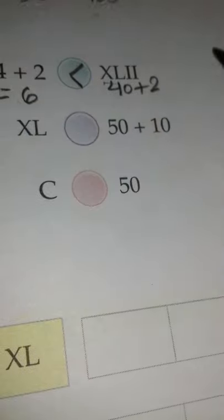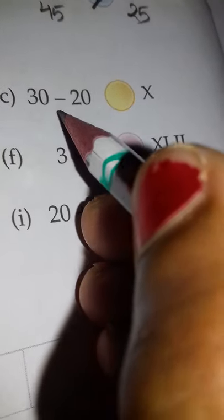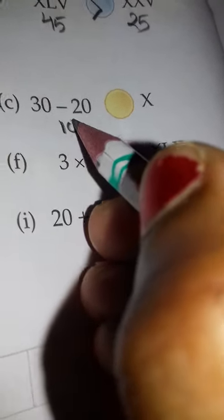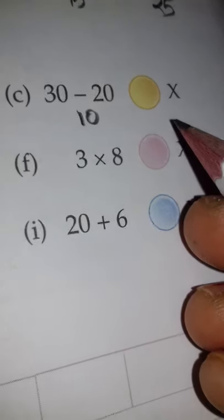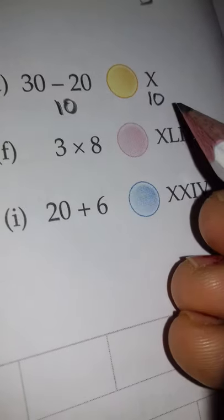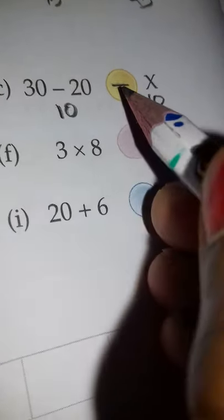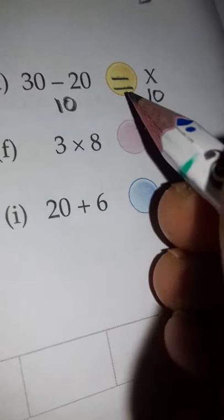Part (c): 30 minus 20 on one side, so 30 minus 20 means how much is left? 10. And the other side also is given as X, which means 10. So this side is 10 and the other side also is 10, so both sides are equal. We will put the equal symbol here.